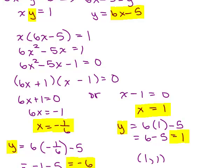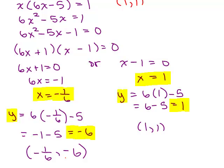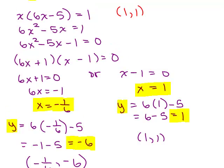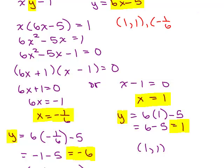So my ordered pairs for my solution, one of them was 1, 1, and the other one is negative 1/6, negative 6. So those are our solutions to this problem.